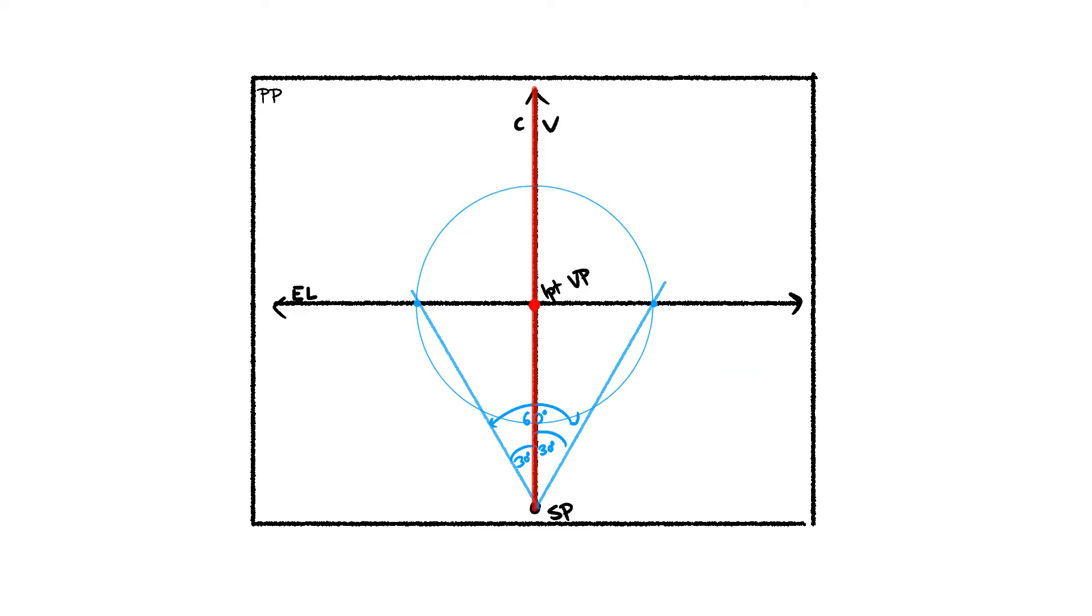Next, our center of vision or CV line is the imaginary line that goes vertically through the center of our vision. Simple as that. And if you remember from our first video, where this line intersects with the eye line is going to mark our one point vanishing point, which is also the center of our vision point.